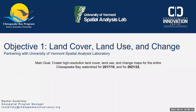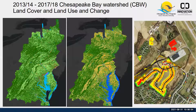I'm managing the land cover, land use, and change project, partnering with UVM. The main goal is to create three data sets for the entire Chesapeake Bay watershed for 2017–18 and 2021–22. Back in 2016, we published 2013–14 high-resolution one-meter land cover and land use data sets for the entire Chesapeake Bay watershed and intersecting counties, covering a hundred thousand square miles. This project creates a 2017–18 product and change maps between the two time periods.